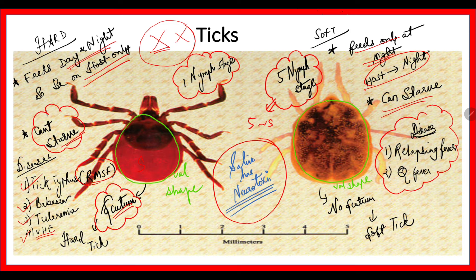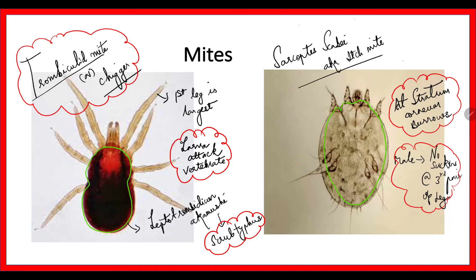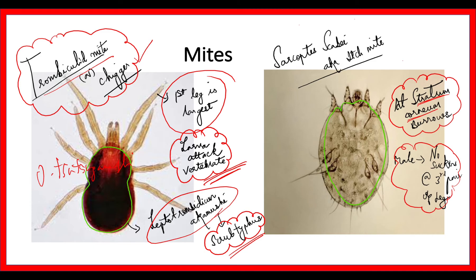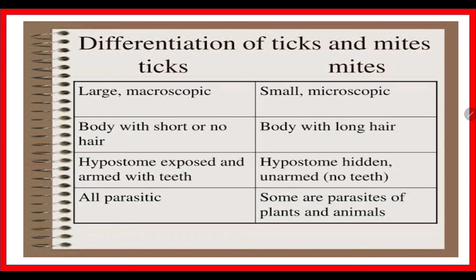Next are mites — similar to ticks but with long hair. The trombiculid mite is also called chigger, and Leptotrombidium akamushi is the one causing scrub typhus, caused by Orientia tsutsugamushi. The larval form is the one that attacks, not the adult form. Sarcoptes scabiei is very peculiar — it is the itch mite causing scabies. It burrows into the stratum corneum of the skin and lays eggs there. To differentiate male and female Sarcoptes: the male has no sucker on the third pair of legs. To differentiate ticks from mites: remember that mites have long hair.